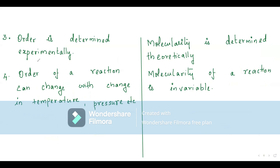Order is an experimental quantity determined by conducting experiments, whereas molecularity is theoretical — you just look at the balanced elementary equation. Order can also change with temperature or pressure, whereas molecularity of a reaction is invariable and does not change regardless of temperature changes.